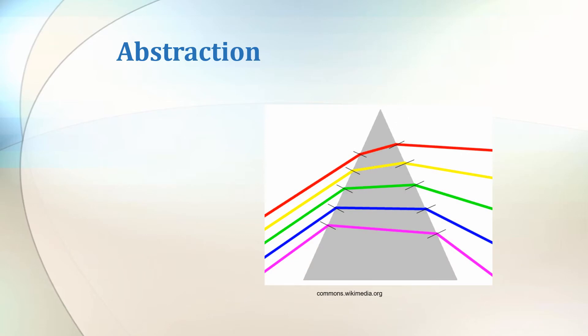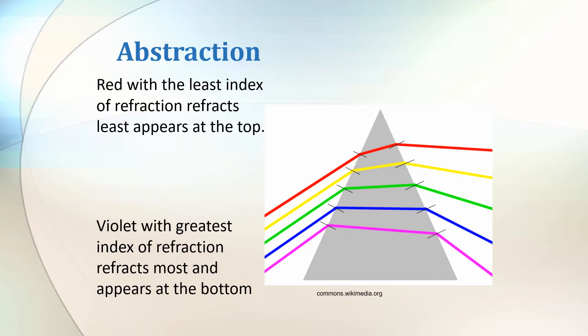When white light enters the prism, red with the least index of refraction refracts least and appears at the top, while violet with greatest index of refraction refracts most and appears at the bottom.